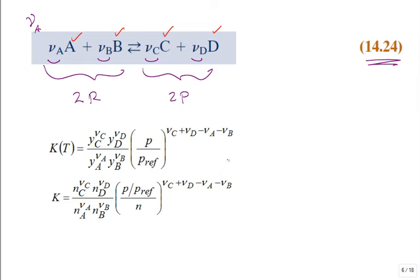Now if this is reversible, why don't we just switch the sides? Does it make a big difference? No, it really doesn't make a big difference, but it will change that K — it will invert it for the equilibrium constant.